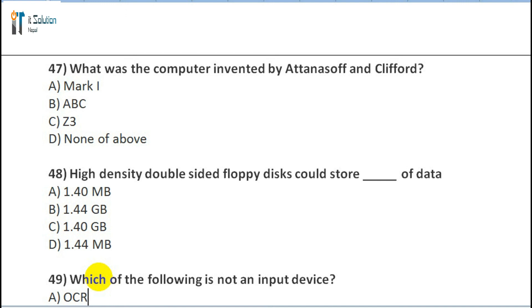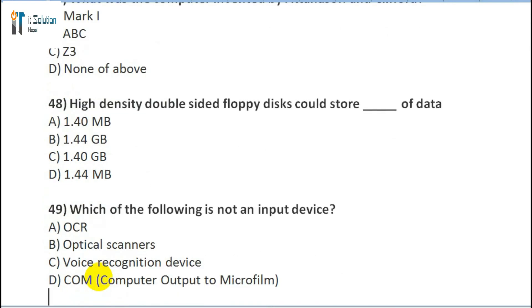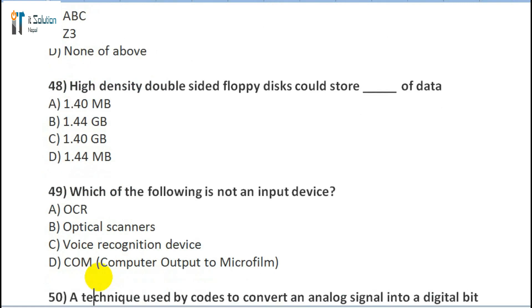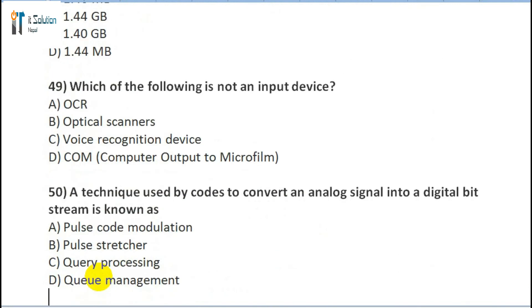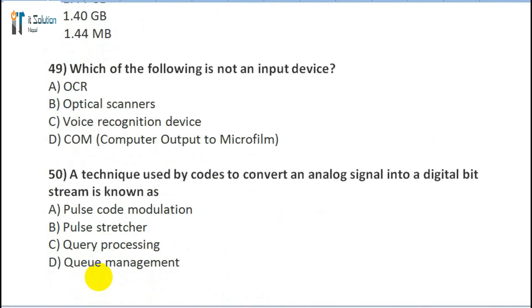Question 49: Which of the following is not an input device? A) OCR, B) Optical scanners, C) Voice recognition device, D) COM - Computer Output to Microfilm. Question 50: A technique used by codecs to convert an analog signal to a digital bit stream is known as: A) Pulse code modulation, B) Pulse stretcher, C) Query processing, D) Queue management.